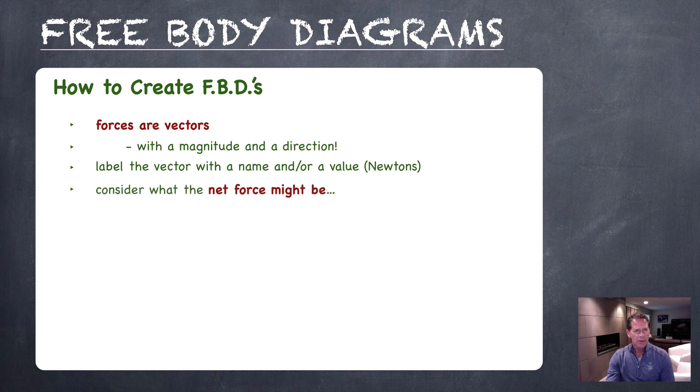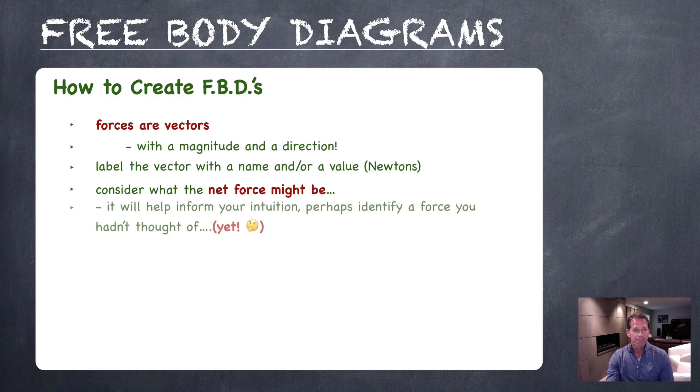The other thing you can use is if you're thinking about what the net force might be - if you expect the net force to be zero, that will help inform what magnitude or length to draw each vector. It'll also inform your intuition. So you may have a situation again where the net force you expect to be zero, and it's not turning out that way, and that will help your intuition and maybe hunt and figure out that there's a force you haven't considered yet to add into your free body diagram.